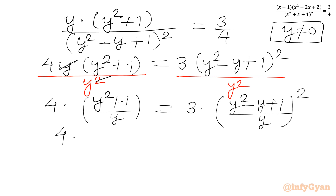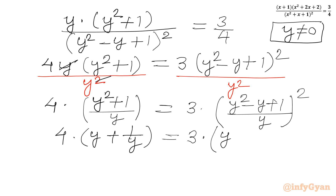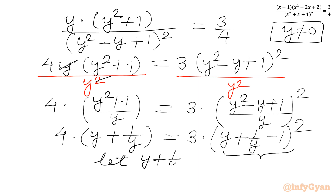Now we will divide and write y plus 1 over y, equal to 3 times y minus 1 plus 1 over y, so we can write y plus 1 over y minus 1, and then whole square. Now I will consider y plus 1 over y minus 1 equal to a. So y plus 1 over y equal to a plus 1, from this equation.